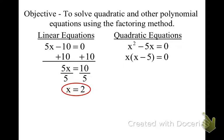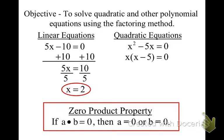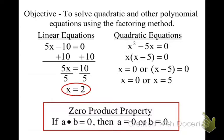There is a property called the zero product property, and you probably did this back in third grade. It says when you multiply two numbers together and it equals 0, then one of those two numbers has to equal 0. So we are using the zero product property to solve for these x's. We take both factors and set them equal to 0: x equals 0, and x minus 5 equals 0. We solve — the first one has no work, the second we add 5 — and we get x equals 0 or x equals 5.